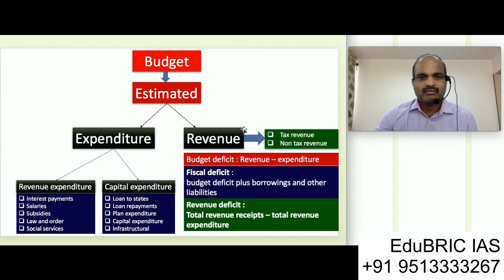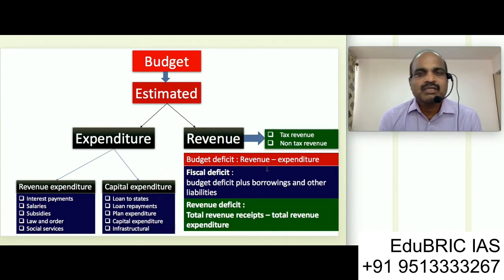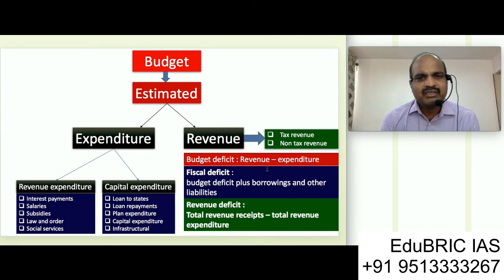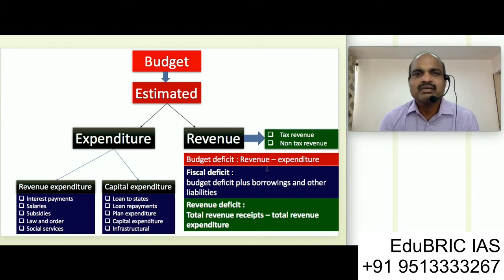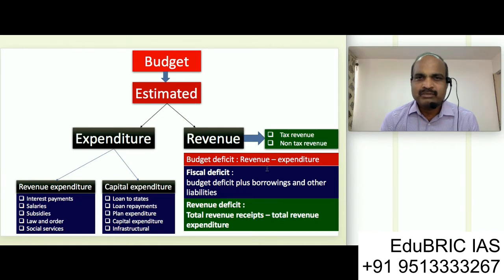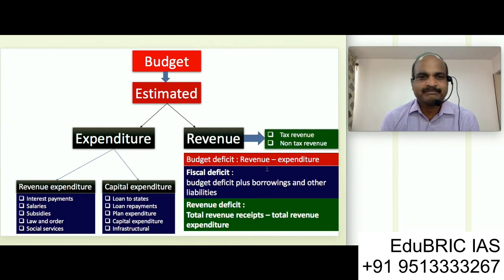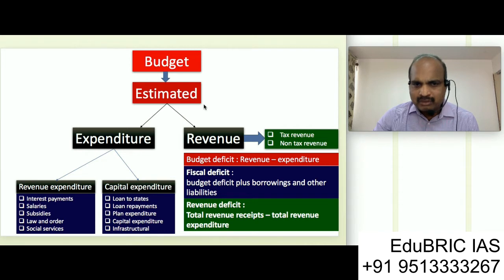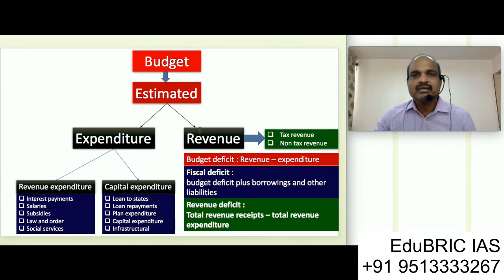The next slide clearly says: before you want to understand very clearly what is the objective of the Fiscal Responsibility and Budget Management Act, I want you to understand two things very clearly. Number one, what is a budget? Number two, what is all about deficit? This video is going to bring you very clear information about the objective of the FRBM Act of 2003. Budget in general sense, as you are all aware, is an estimated expenditure and revenue.